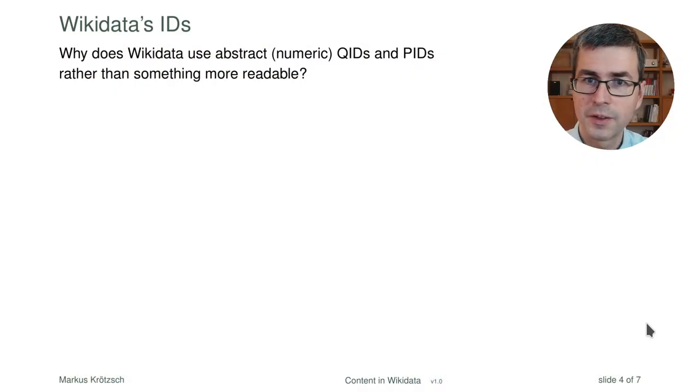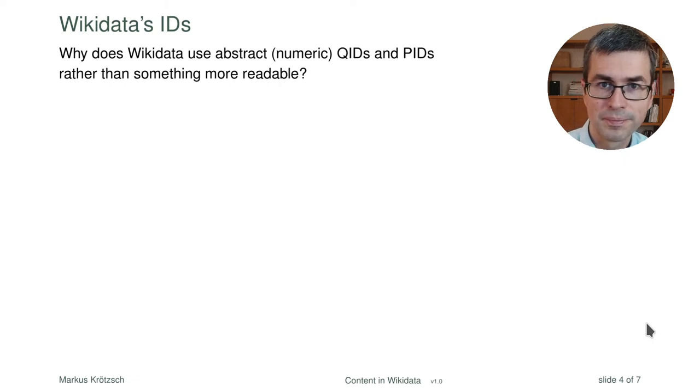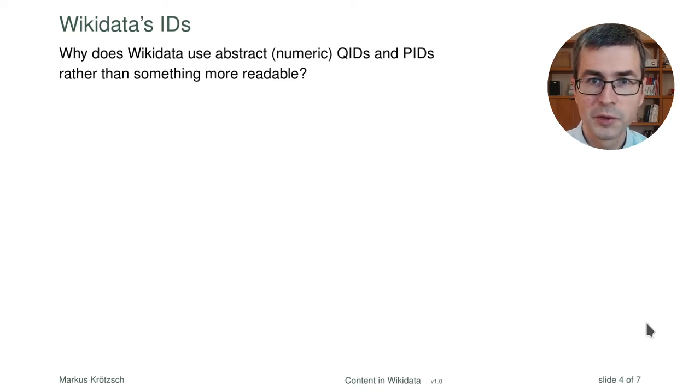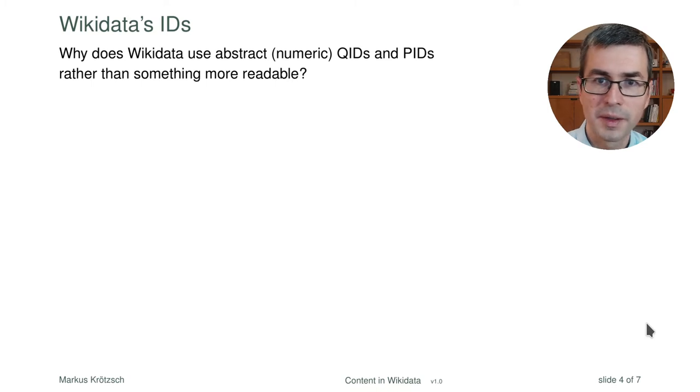These are the essential parts of the data model. One of the first questions we often get with Wikidata is: how about those strange IDs — this QID, Q80 and Q-whatever — how does that work? Is that really a good idea? Couldn't we have something more readable? Couldn't we, for example, call Tim Berners-Lee 'Tim Berners-Lee' and use this as an ID? Well, if you think about it, you can probably come up with a number of reasons why numeric IDs are at an advantage here.